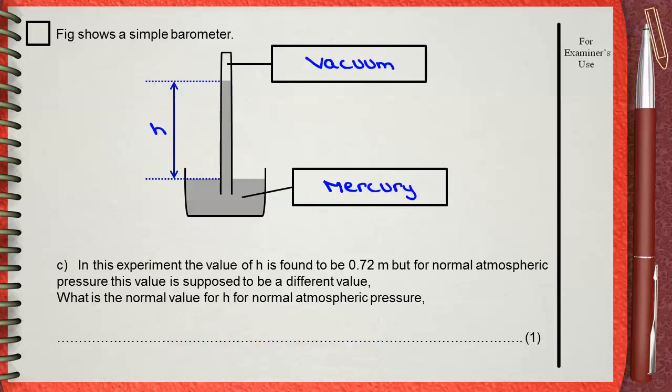You must study this experiment very well, and you will know that at standard conditions at sea level, the value of H must be 76 centimeters of mercury, which is 0.76 meters of mercury.